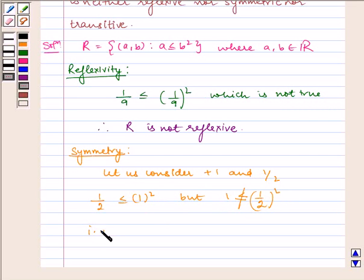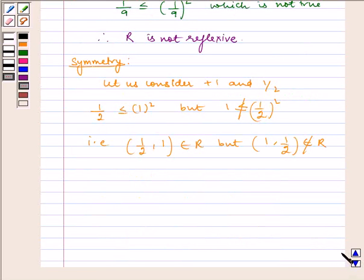That is, (1/2, 1) belongs to R but (1, 1/2) does not belong to R. Therefore, R is not symmetric.